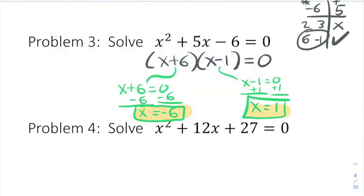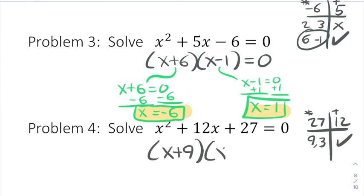We're going to do the same kind of thing here for number 4. We make our t-chart. We ask what multiplies to, in this case, 27 and adds to the coefficient, which is 12. And this time I come up with 9 and 3 right away, which add up to 12 and that works. So this factors into x plus 9 and x plus 3.